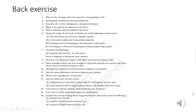Now for the back exercise, I will be discussing a few questions. First: what is the average cell cycle span for mammalian cells? It will be approximately 24 hours. Next: distinguish between cytokinesis and karyokinesis. Cytokinesis is the division of the cytoplasm and cell, and karyokinesis is the division of the nucleus.